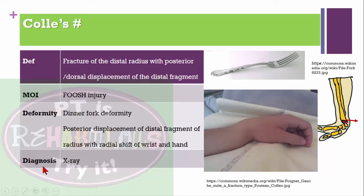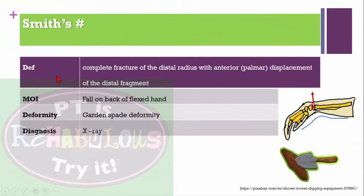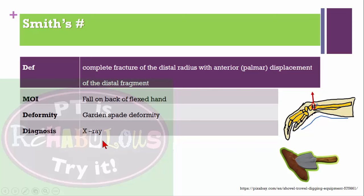Smith's fracture: complete fracture of the distal radius with anterior or palmar displacement of the distal fragment. Most common mechanism is fall on the back of a flexed hand. The deformity is called a garden spade deformity. Diagnosed with X-ray.